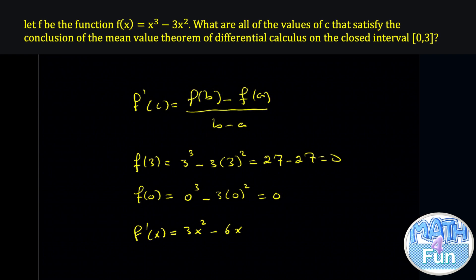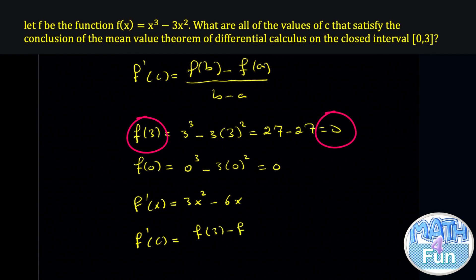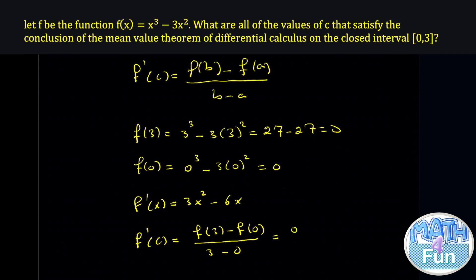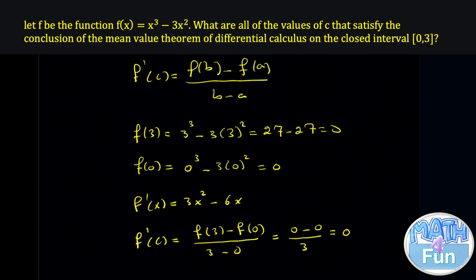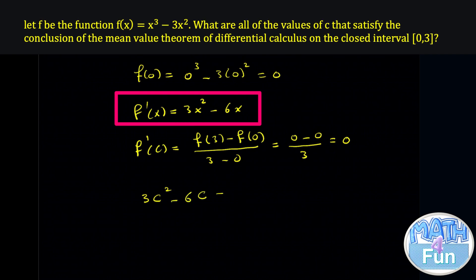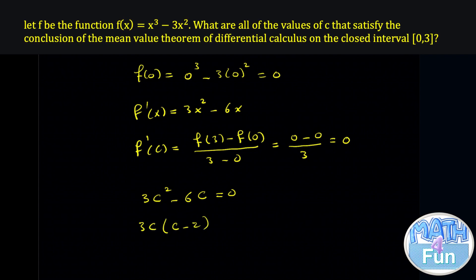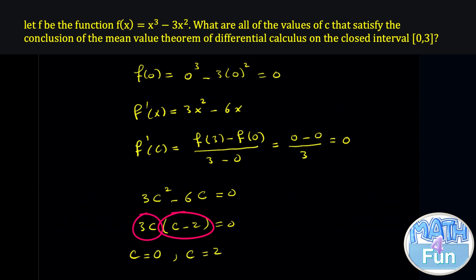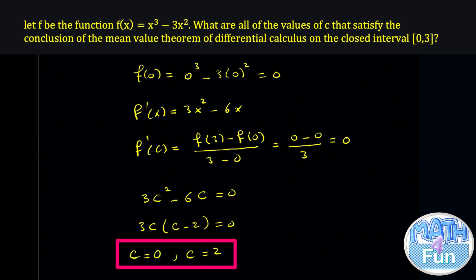We can now apply the mean value theorem: f prime of c equals f of 3 minus f of 0 over 3 minus 0, which equals 0 minus 0 over 3, equal to 0. To find the value of c, we set f prime of c equal to 0 and solve: 3c squared minus 6c equals 0. Taking out common factor 3c, it becomes 3c times c minus 2 equals 0. Solving, c equals 0 from the first factor and c equals 2 from the second, so the values of c that satisfy the mean value theorem are c equal to 0 and c equal to 2.